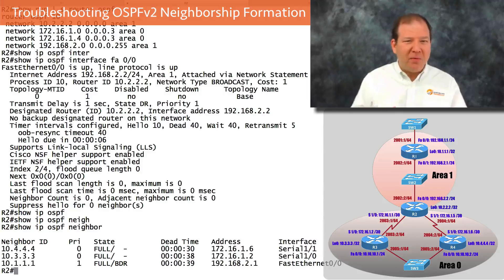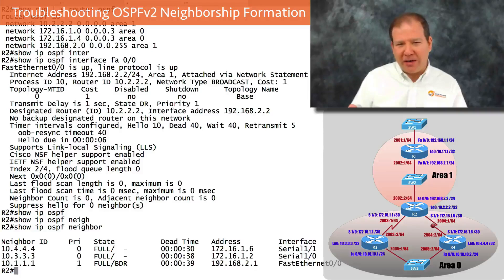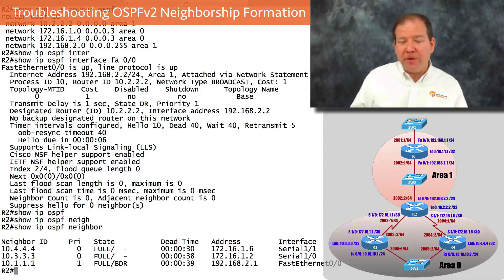We've identified and resolved two issues that prevented neighborship formation: a mismatched hello timer on R1 and an incorrect area assignment on R3. However, just because we're now neighbors doesn't necessarily mean we're exchanging all the routes we want to exchange — and that will be the topic of the next video on troubleshooting OSPF routing issues.